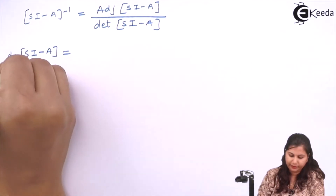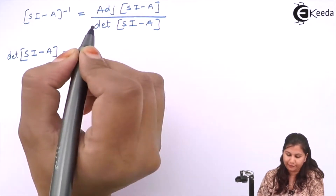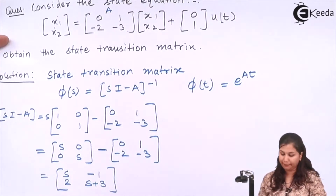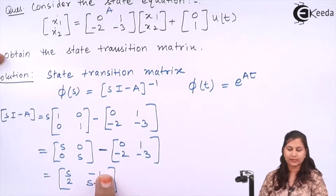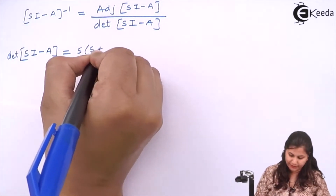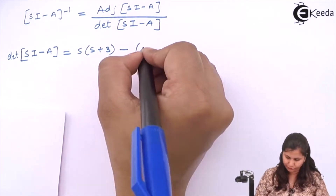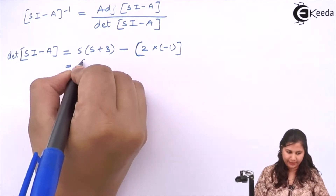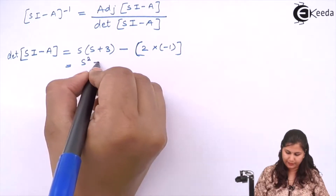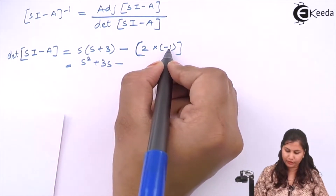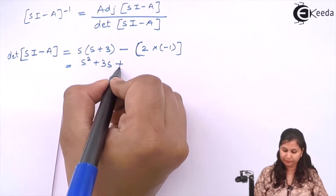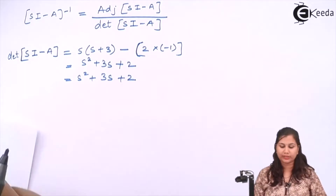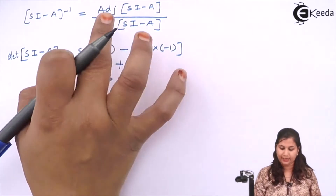The determinant of sI minus A: we multiply s with (s+3) minus the multiplication of 2 and -1, which gives s(s+3) plus 2, expanding to s² + 3s + 2. So this is the determinant of sI minus A.